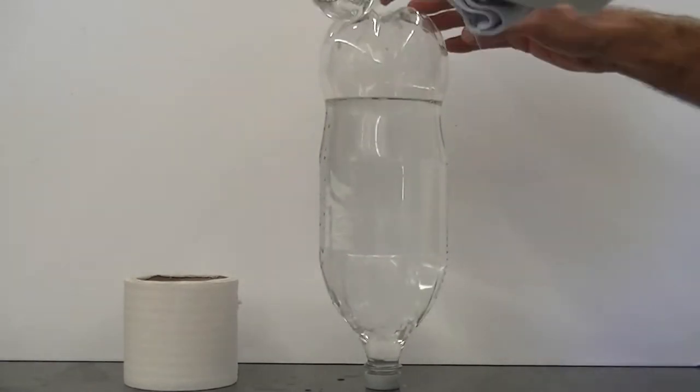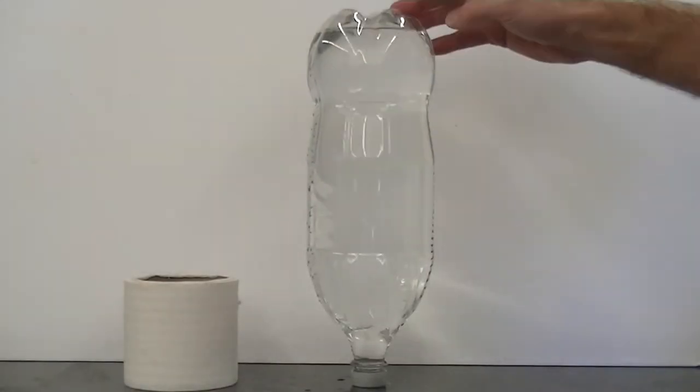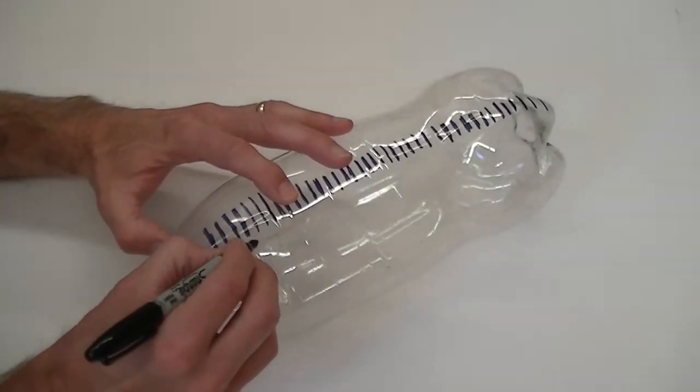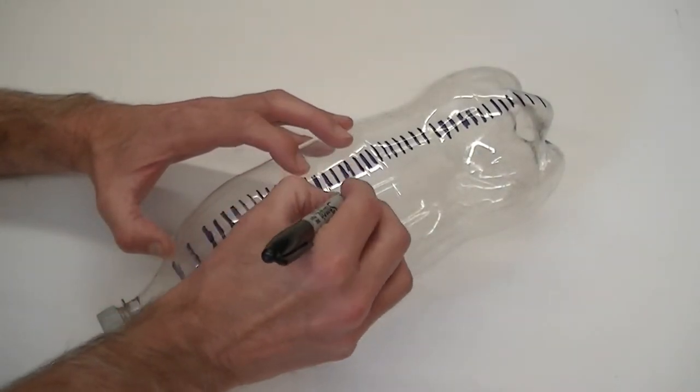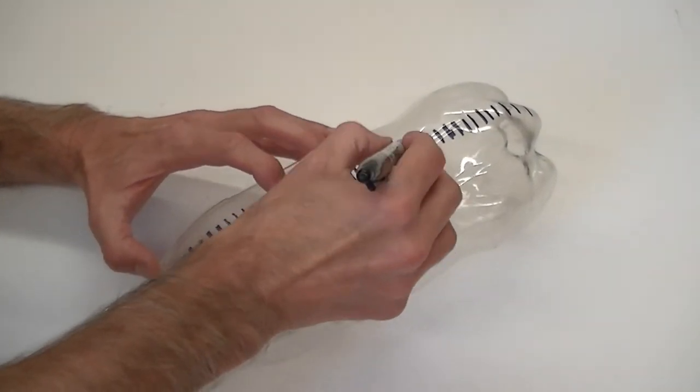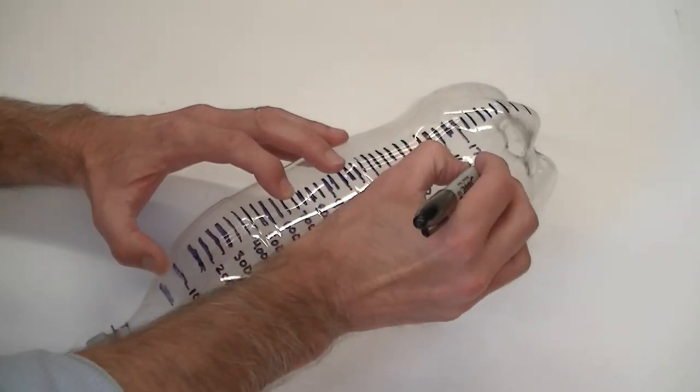This step takes a lot of time, but it's worth it so that you can take foam volume measurements later on. After emptying the water out of the bottle, write the number that corresponds to the appropriate volume in milliliters for each line.